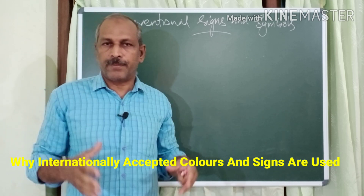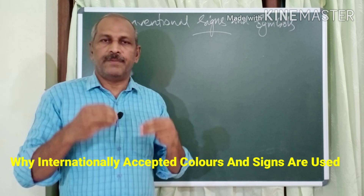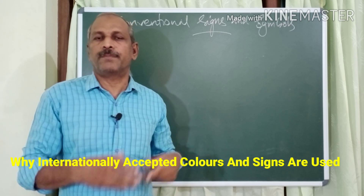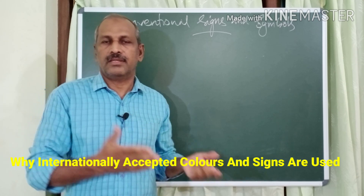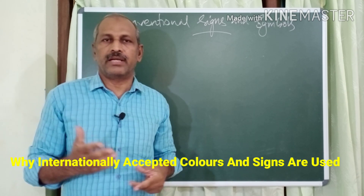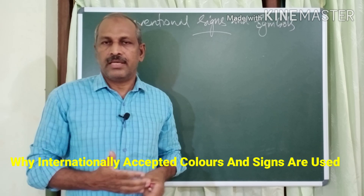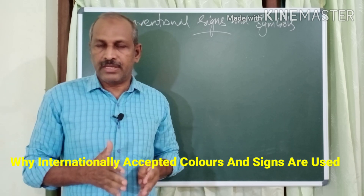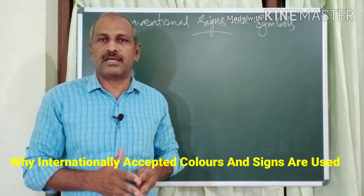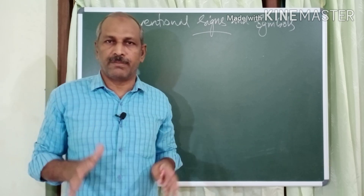Because a map prepared in one country can easily be understood by the people of other countries. For example, a map prepared in India can easily be analyzed by the people of Pakistan, Bangladesh, European countries, Gulf countries, or American countries. That is the reason internationally accepted colors and symbols are used in the topographic map.